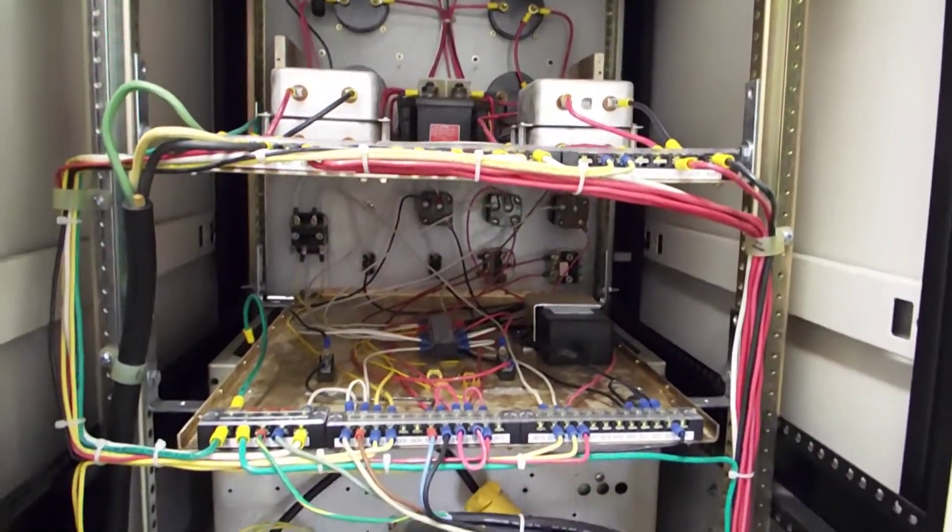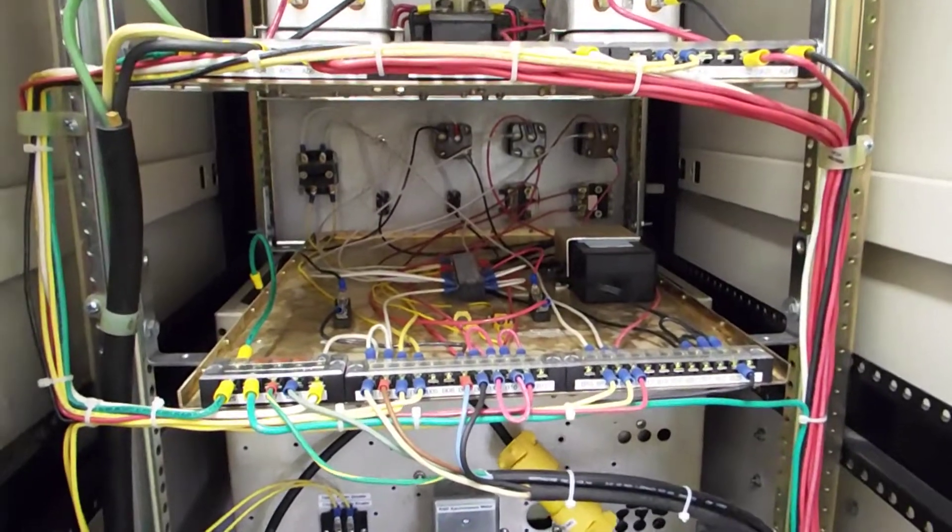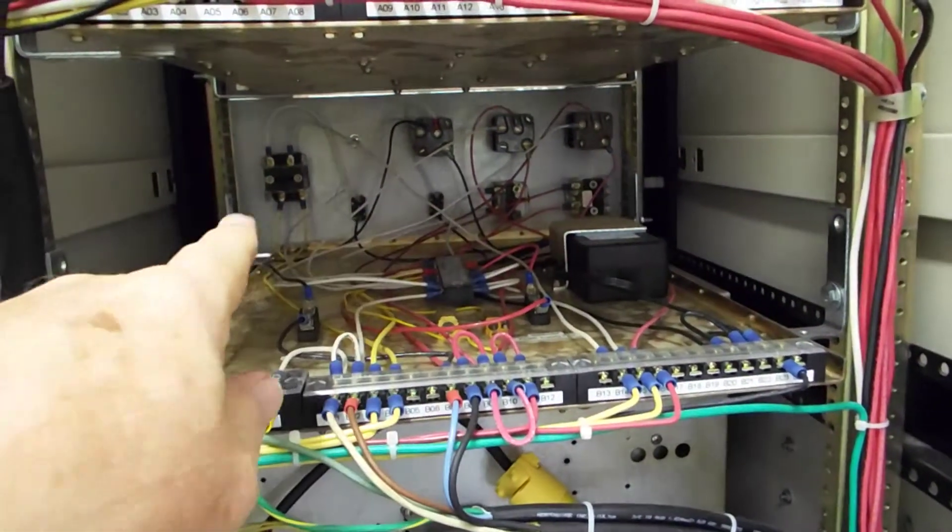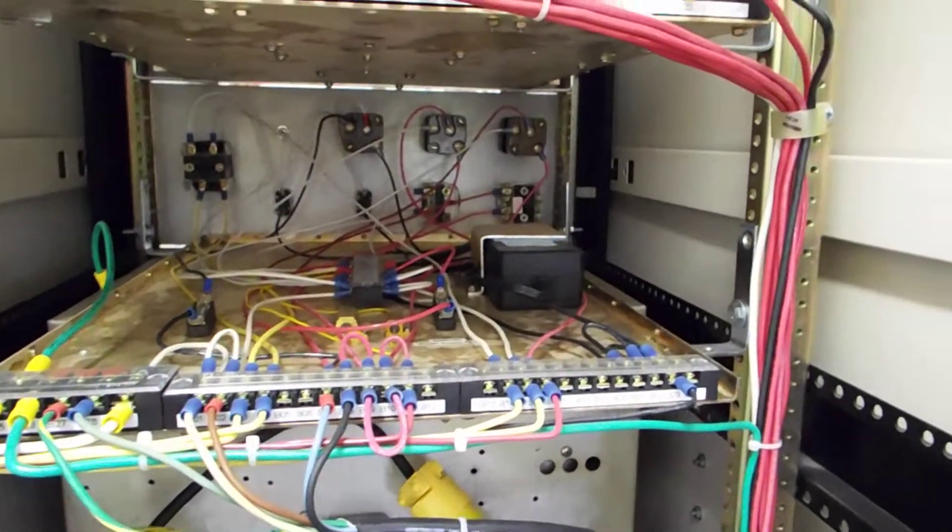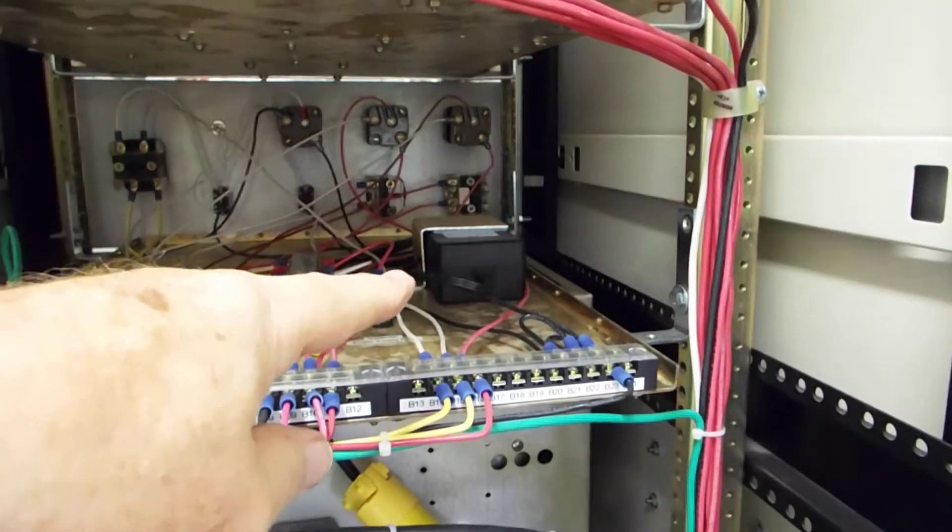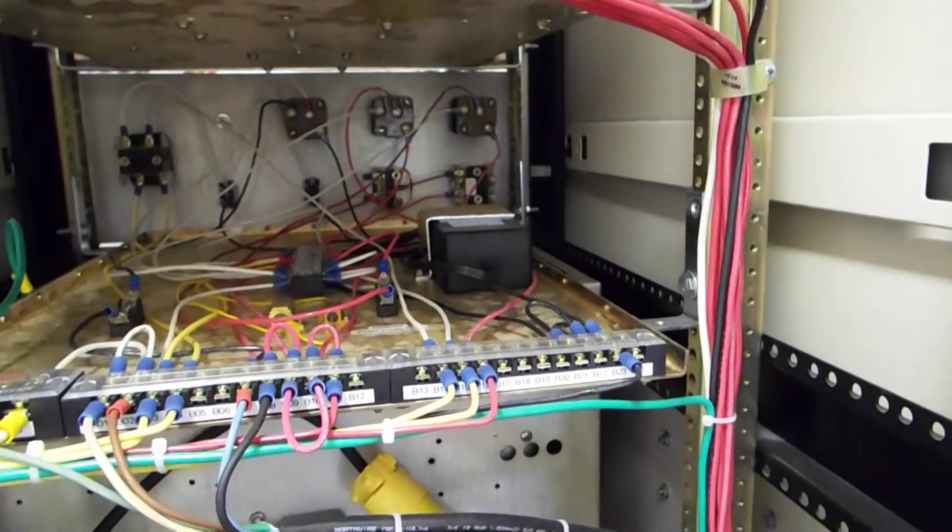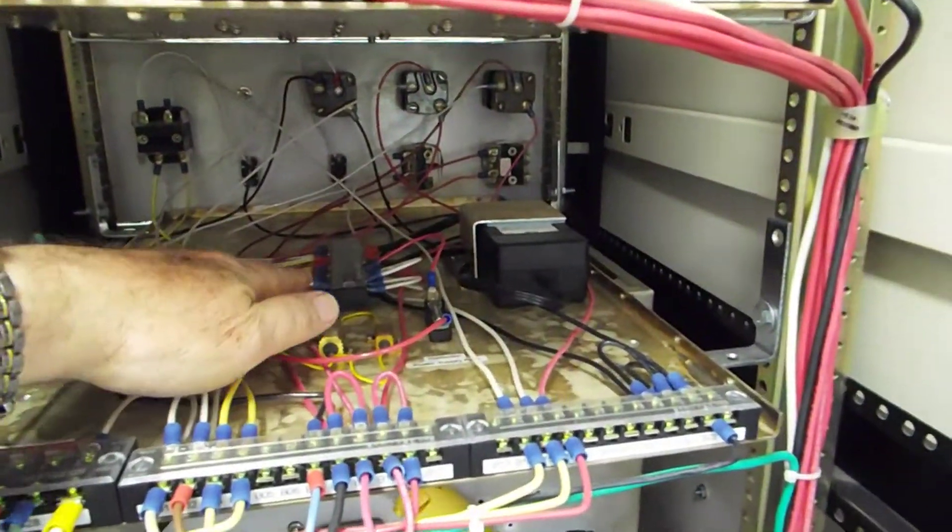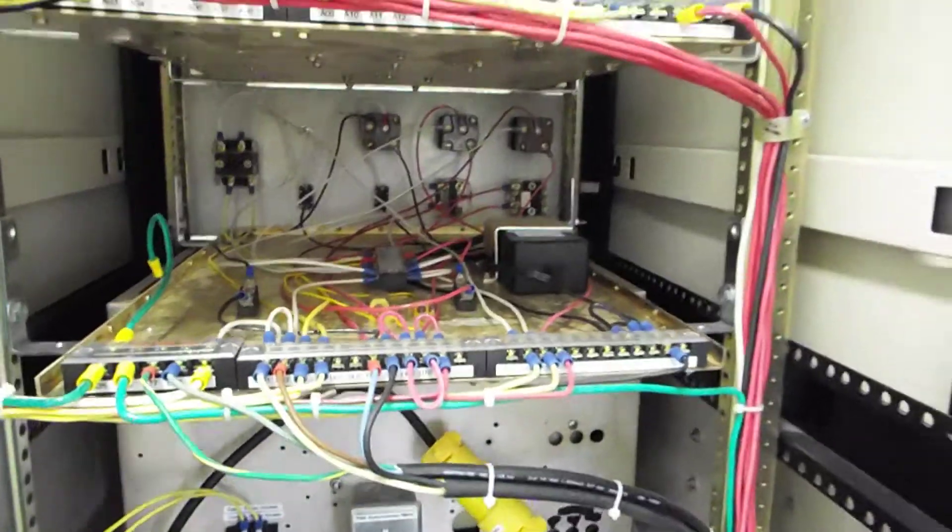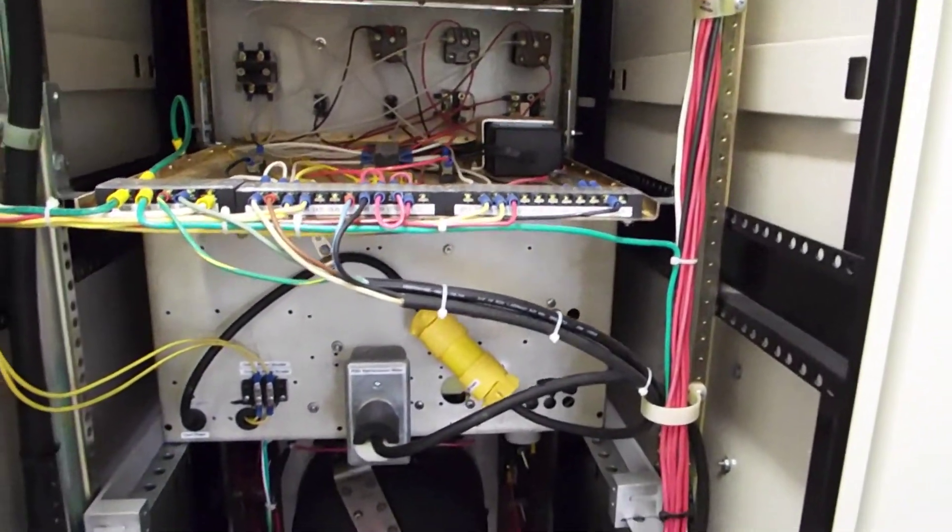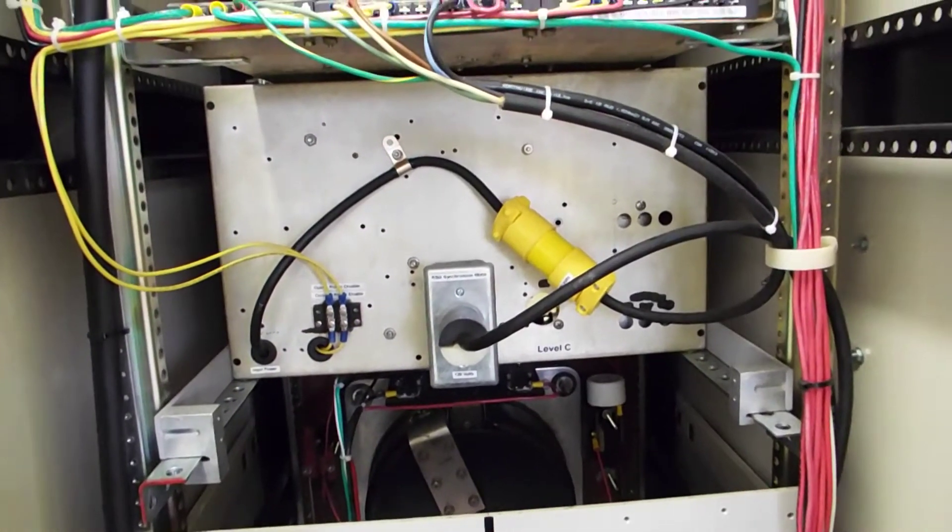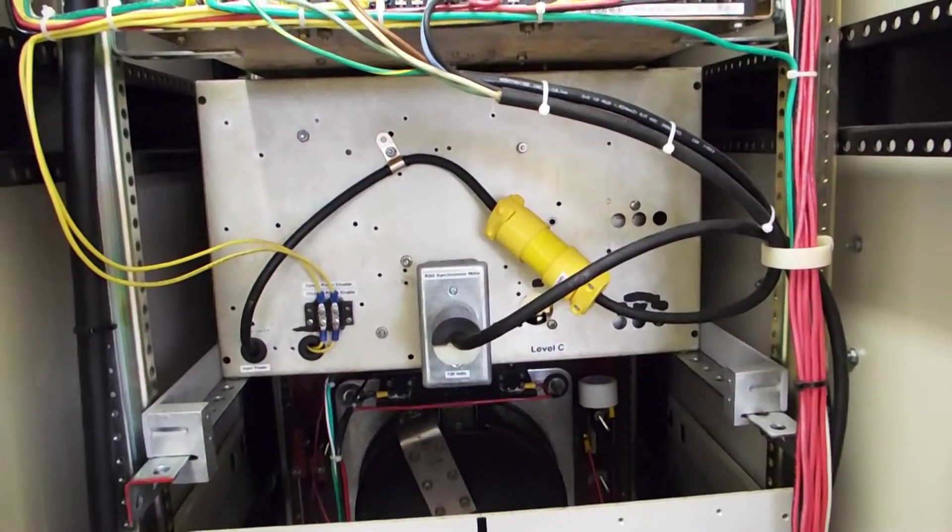So, then moving down to the next level, those are the front panel switches. You can see the back of there. And then there's a power supply for the contactor, small DC power supply. And then a lot of wiring and junctions and things. And then this is the box that contains the rotary spark gap phase control.